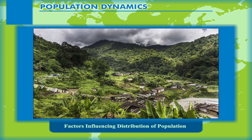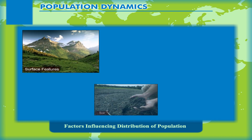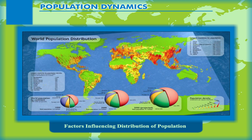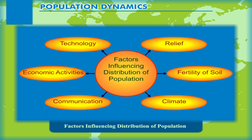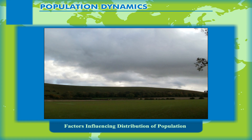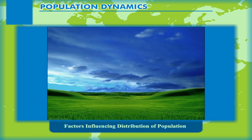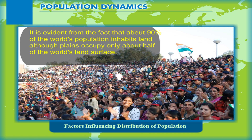In this world, there are vast variations in climate, surface features, soil, vegetation, etc. This diversity is reflected in a great difference in the distribution of population. No single factor can control population distribution; all factors work in combination. Relief is the most important factor, as people always prefer plains over mountains and plateaus since most productive activities can easily be carried out on plains. About 90% of the world's population inhabits plains, although plains occupy only about half of the world's land surface.